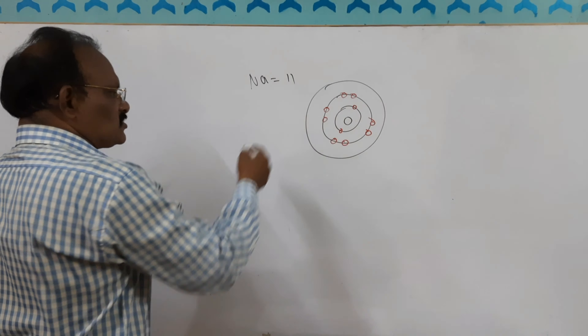Now take the example of chlorine. Chlorine has atomic number 17, so: first shell 2, second shell 8, third shell 7 — 2 plus 8 plus 7 equals 17. In the outermost shell there are 7 electrons. It is also not stable because the octet is not completed — the outermost shell must have 8 electrons.